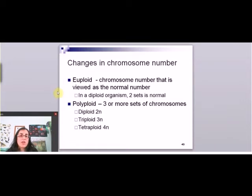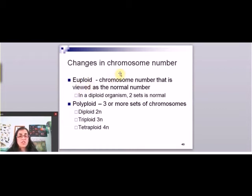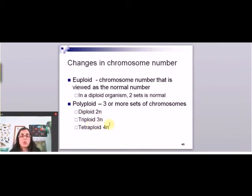Other than just pieces of chromosomes being messed up, you can also have big changes in chromosome number — a whole extra or missing chromosome, or even a whole set of chromosomes. The normal chromosome number in an organism is its euploid number. For humans, two sets is normal, so 46 chromosomes is normal. Polyploidy is when an organism has three or more sets of chromosomes rather than two. Diploid is 2n; polyploidy might be triploid (3n) or tetraploid (4n).